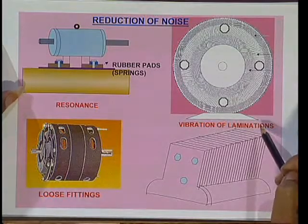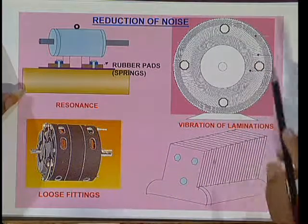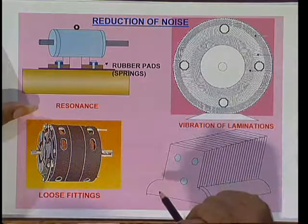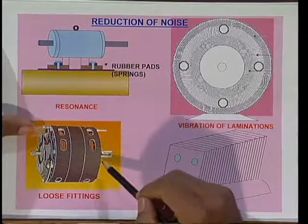To reduce eddy current losses in the motor, the core is laminated. If any air gap is present between the laminations, it creates magnetic noise. This can be reduced by tightening the rivets between the laminations. You can observe stator laminations or pole laminations in the case of DC motors. Another source is noise due to the loose fitting of nuts and bolts, which can be reduced by tightening the nuts and bolts of the motor.